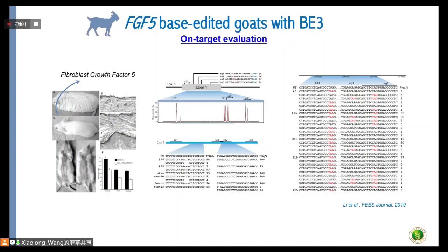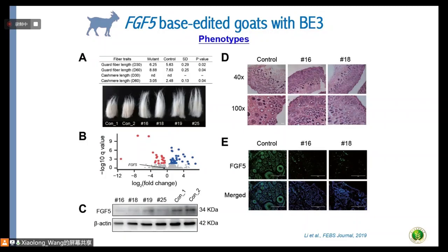Our first story involves the fibroblast growth factor 5 (FGF5) gene, which is a major determinant controlling hair length in mammals. We wanted to disrupt this gene or introduce stop codons in the first exon to produce animals with longer hair. We targeted four guide RNAs to the first exon and generated five edited animals. The phenotypes were promising — four edited animals showed longer hair than control animals. When we conducted RNA sequencing using skin tissues, FGF5 was not significantly differentially expressed between the two groups, implying the mechanism is post-translational.